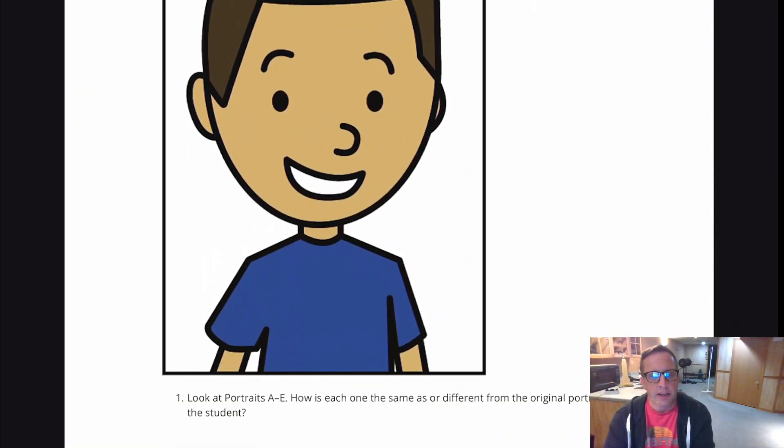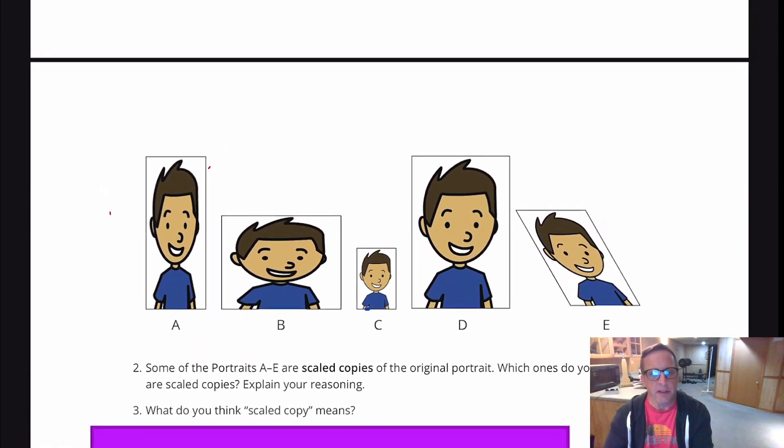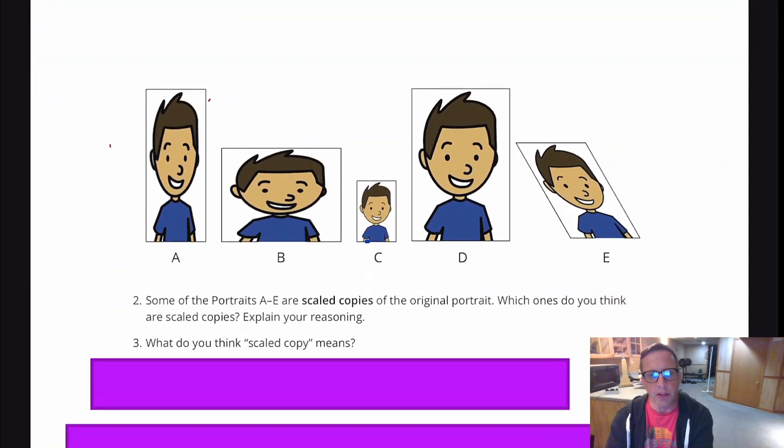This is what it looks like, and the follow-up is basically A through E are some scaled copies right there. We've got some scaled copies, and which ones do you think are scaled copies? Some of them are scaled, some of them are not. And number three says, what do you think scaled copy means?